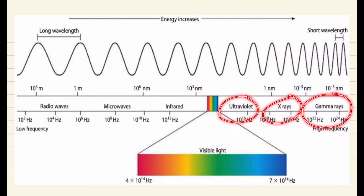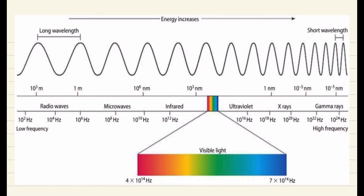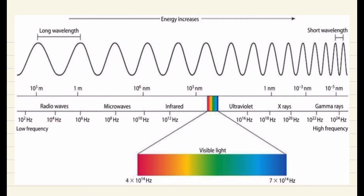Then we have X-rays and then we have the gamma rays. So as you move from left to right, the wavelengths decrease. The radio waves have a wavelength in the order of 10 to the power of 3 meters — so the wavelength is very huge, like around 1000 meters.